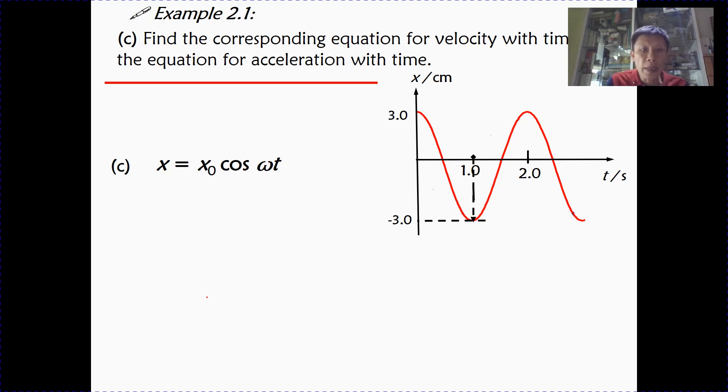So how do we get velocity from displacement? From the concepts of kinematics, you know that velocity is dx/dt, the differentiation of displacement, rate of change of displacement with time. So when you differentiate a cosine graph, you will get a sine graph. And the amplitude now will be omega x0. So this equation now gives you how velocity varies with time.